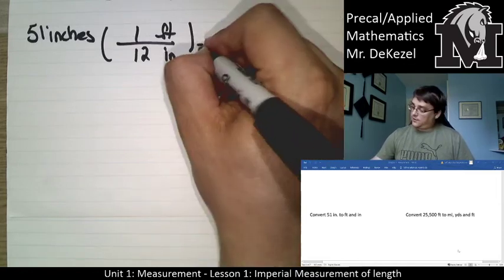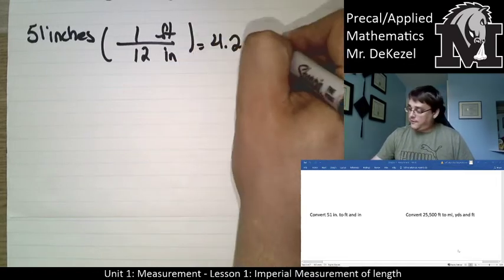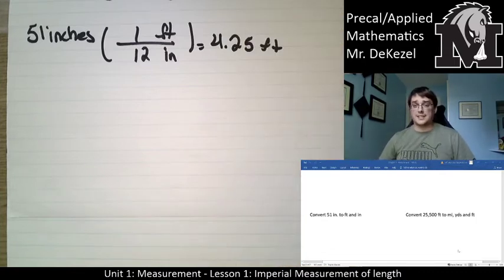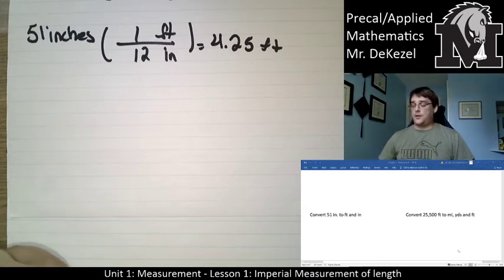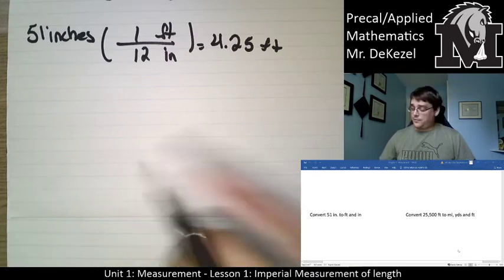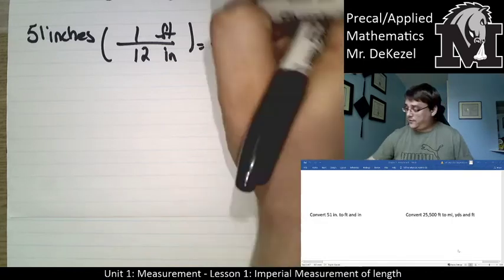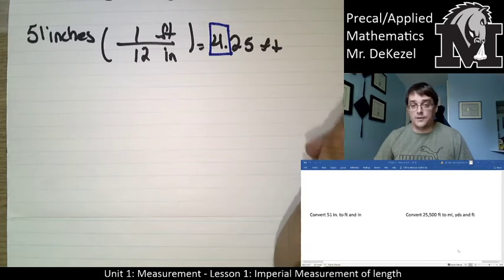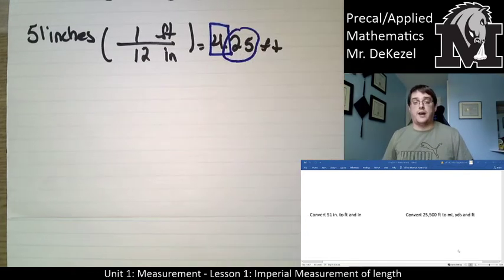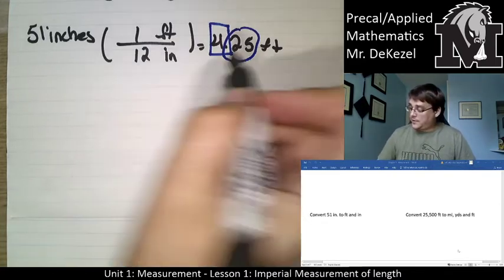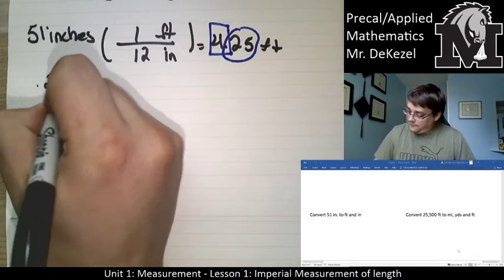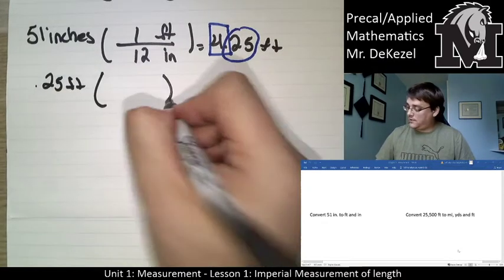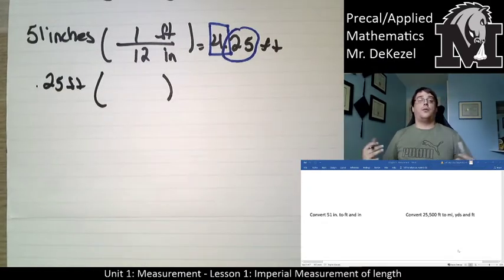Now, 4.25 feet is not exactly what we were hoping for. We wanted 4 feet this-many inches. But we know one of the numbers now: 4 feet is going to be the first number. We need to take the 0.25 feet and find out how many inches that is. So we take 0.25 feet and convert it to inches.